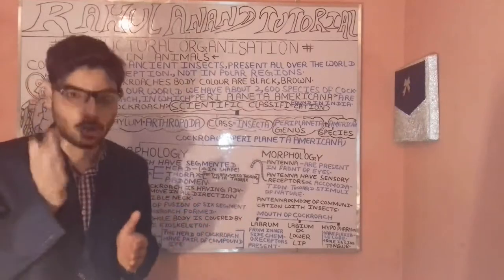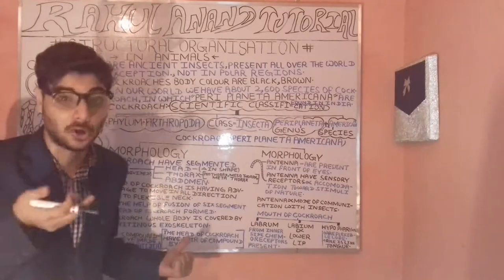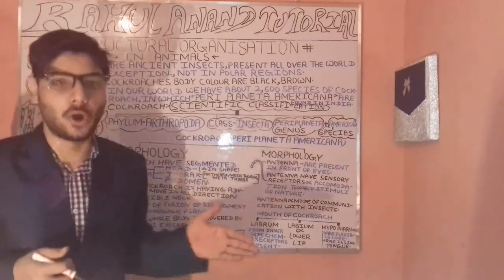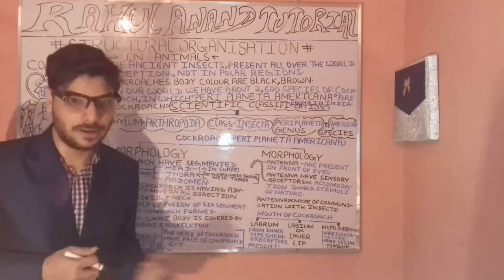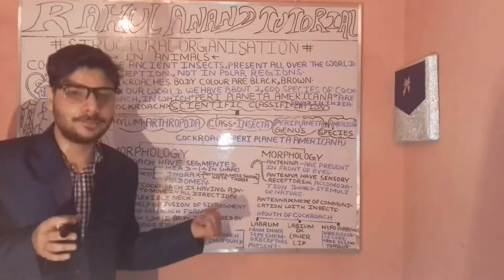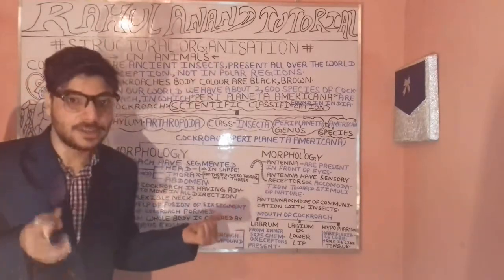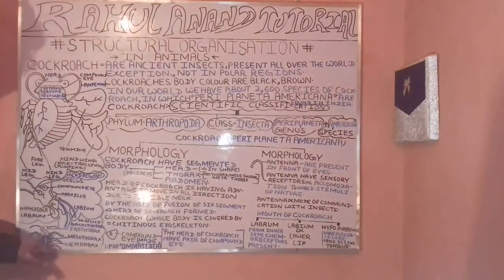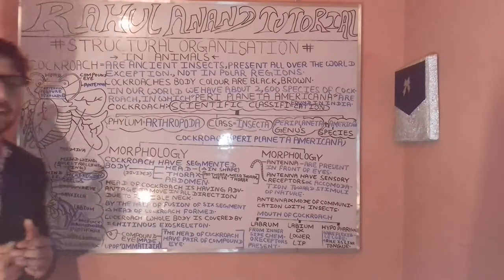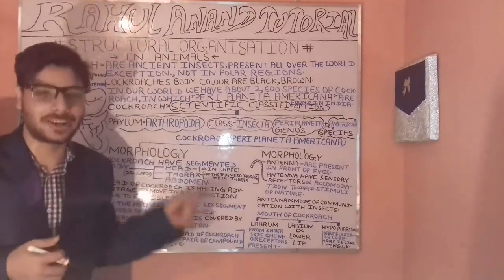Now let's understand the thorax region of the cockroach. It is further divided into three broad categories: the prothorax, the mesothorax, and the metathorax. Each has specialized features which we will understand in the next lecture.